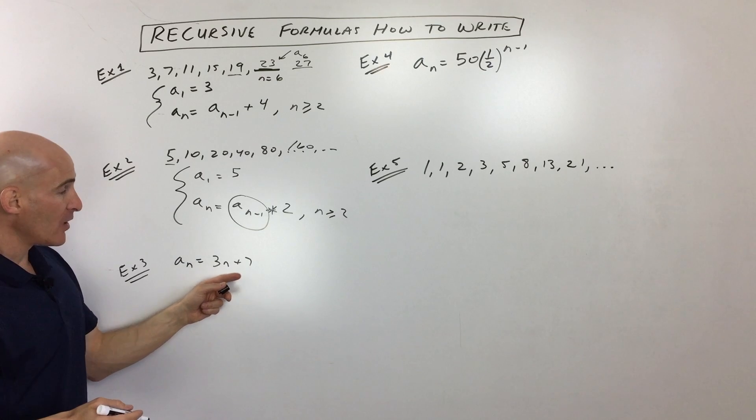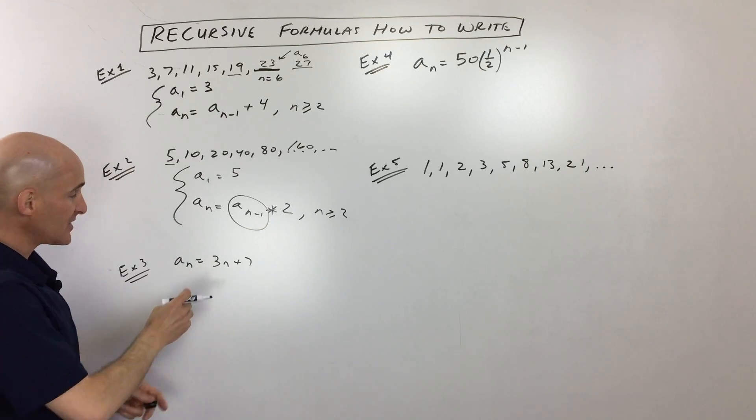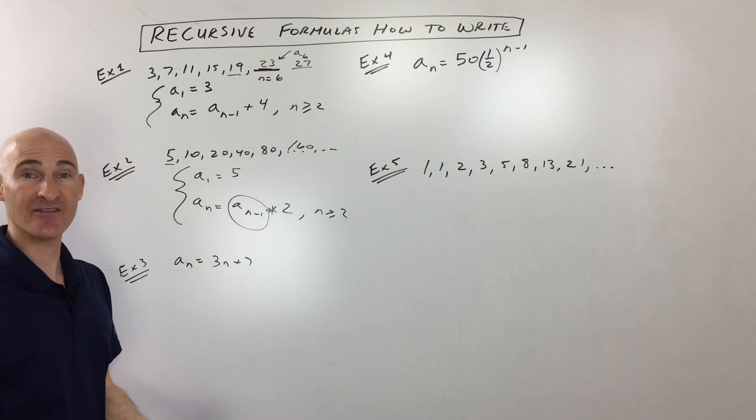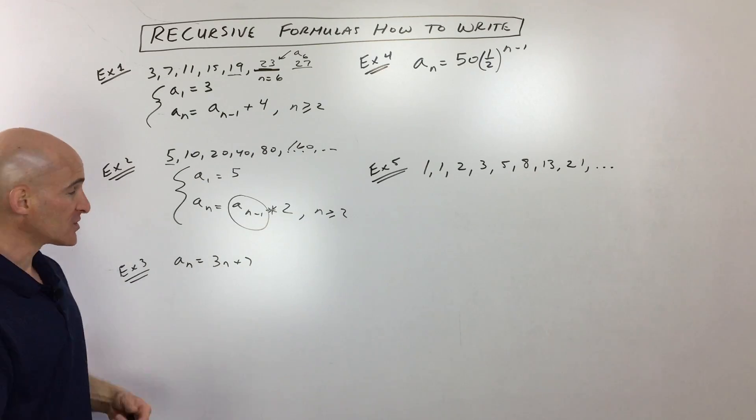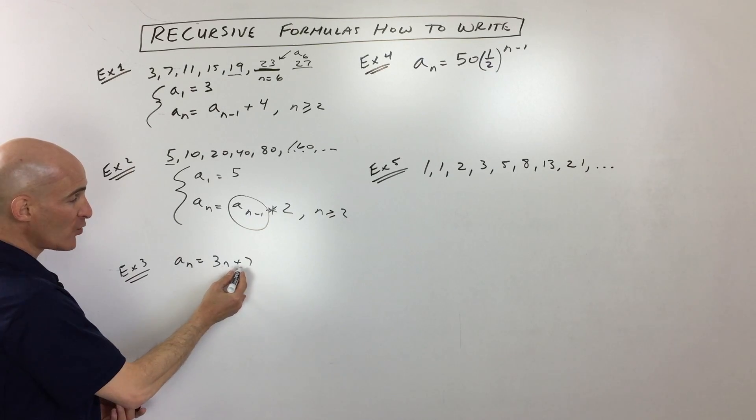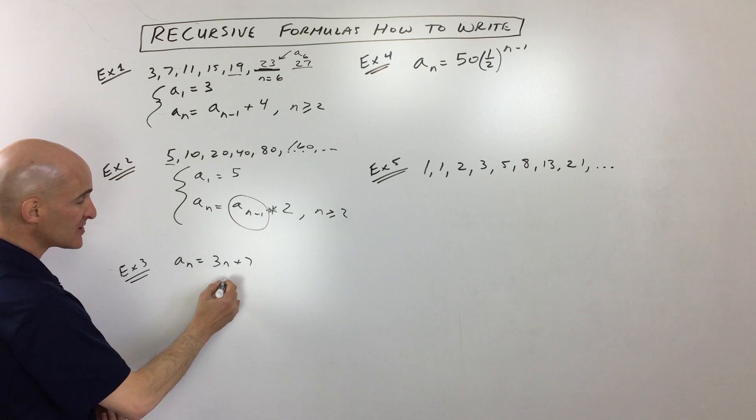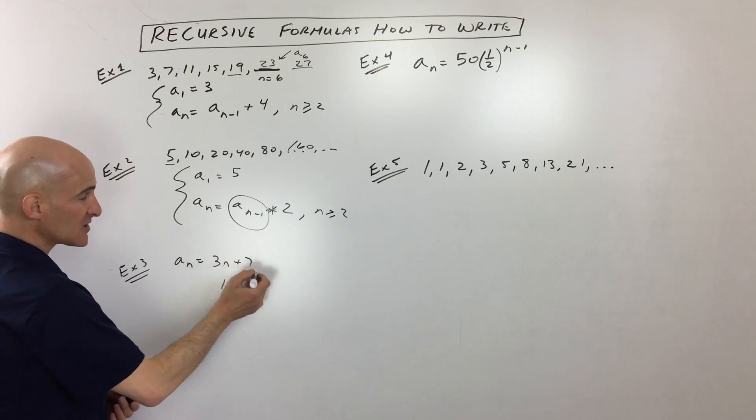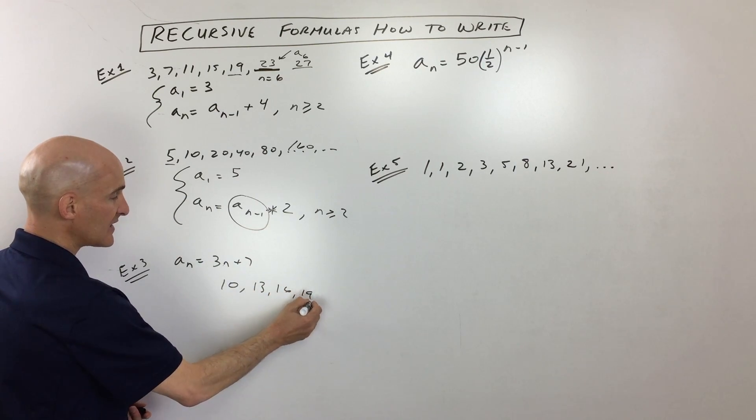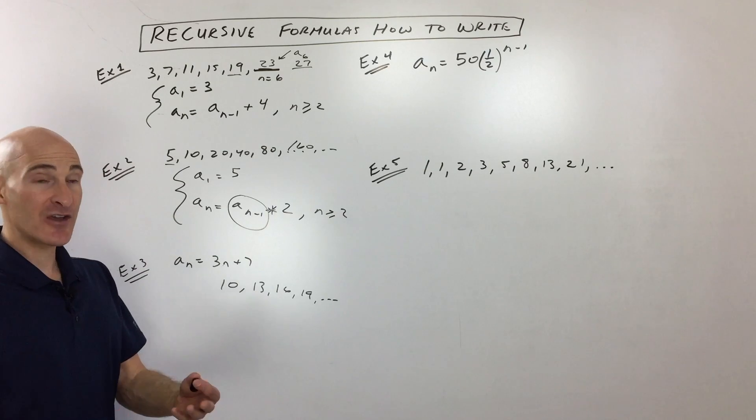Okay, the third example, they're giving us an explicit formula. They're saying if you want to find the 100th term, you put in 100, that's going to be 307. But we want to write a recursive formula. So what oftentimes students will do is just put 1 in. n equals 1, so that gives you 3 times 1 is 3 plus 7 is 10. And then let's put 2 in. That would be 3 times 2 is 6 plus 7 is 13. And let's put 3 in, and that gives us 16, and that gives us 19.